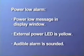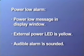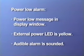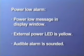The power low alarm occurs when the ventilator is operating on external battery power and the voltage drops to the low level. When a power low alarm occurs, the power low message is flashed in the display window, the external power LED is displayed yellow, and the audible alarm is sounded. To reset the power low alarm, press the silence reset button twice.